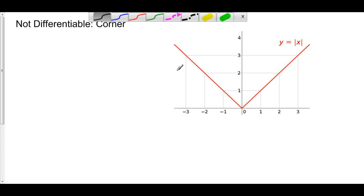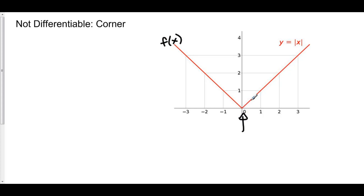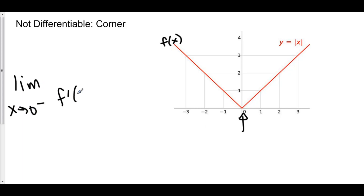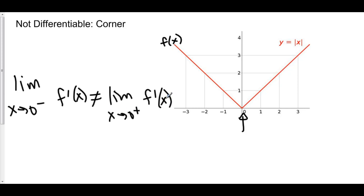The derivative does not exist at a corner. Let's call this function f of x. At x equals zero, we have a corner, and therefore the derivative does not exist. The way we express this is that the derivative from the left-hand side of zero, which here is negative one, is not equal to the derivative from the right-hand side of zero, which here is positive one. So the limit as x approaches zero from the left of f prime of x is not equal to the limit as x approaches zero from the right of f prime of x. Our derivative itself is not continuous at x equals zero.